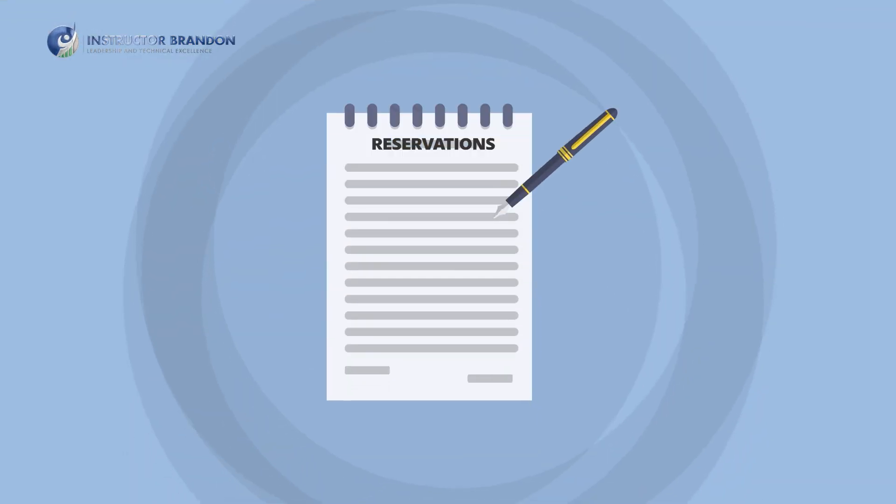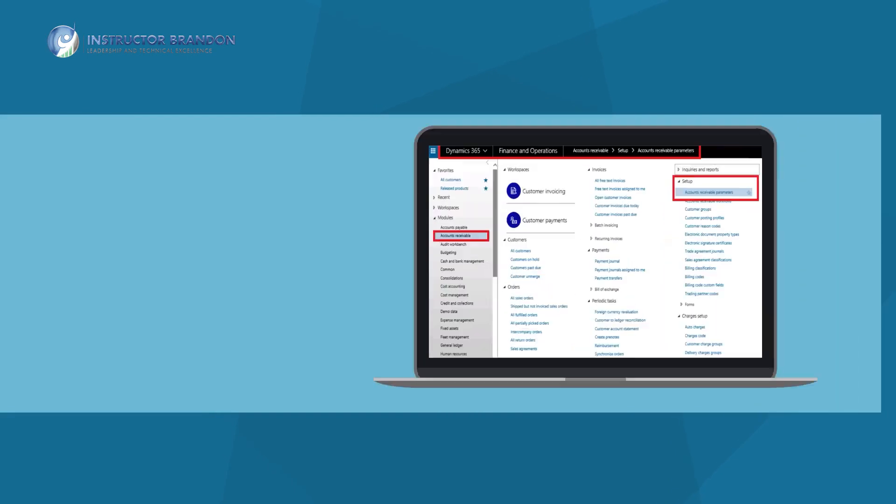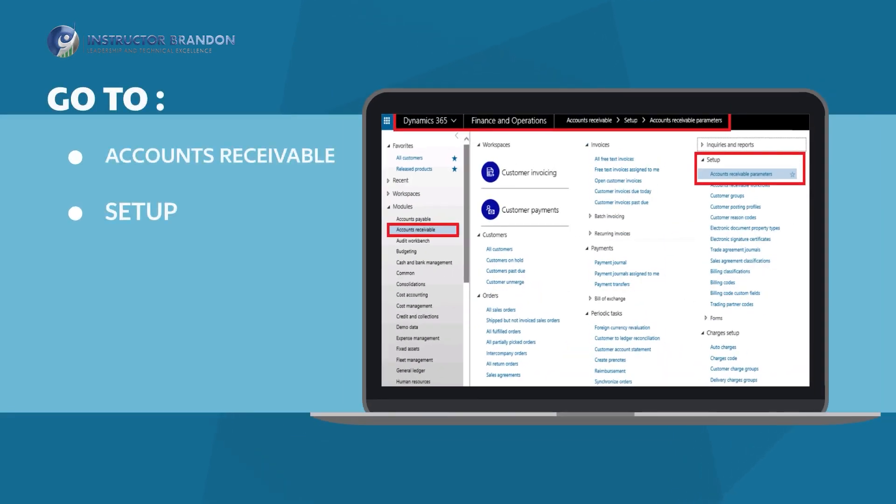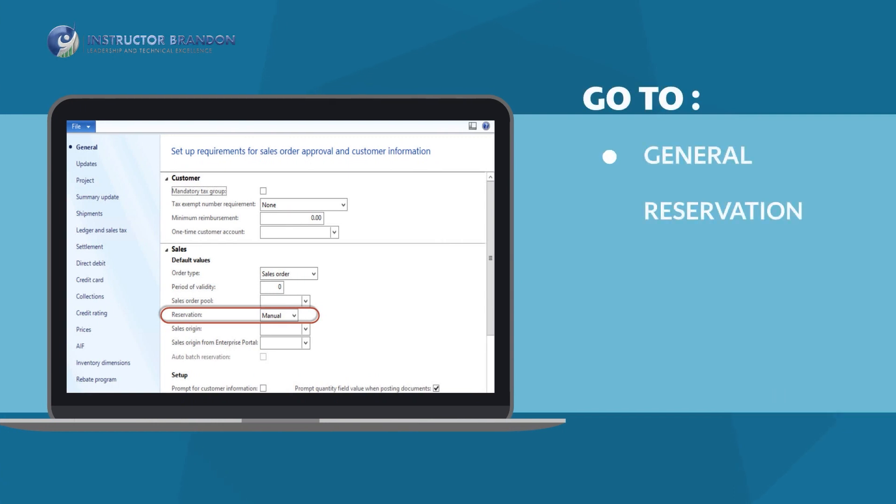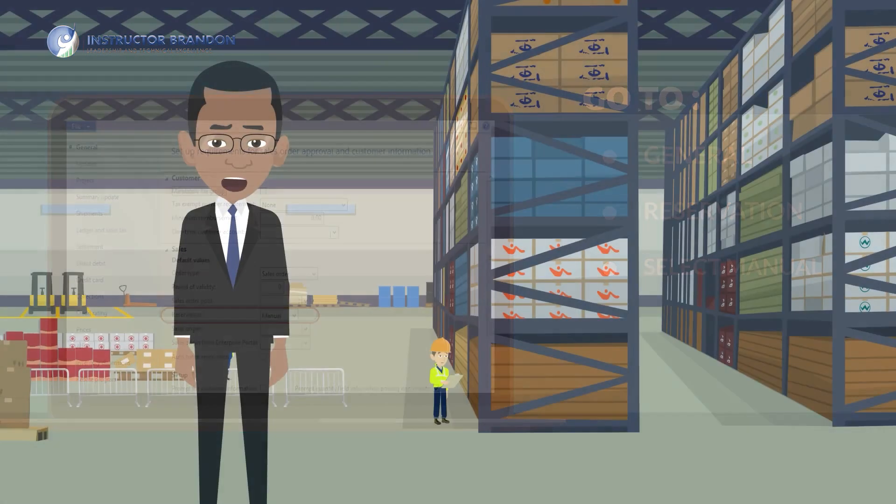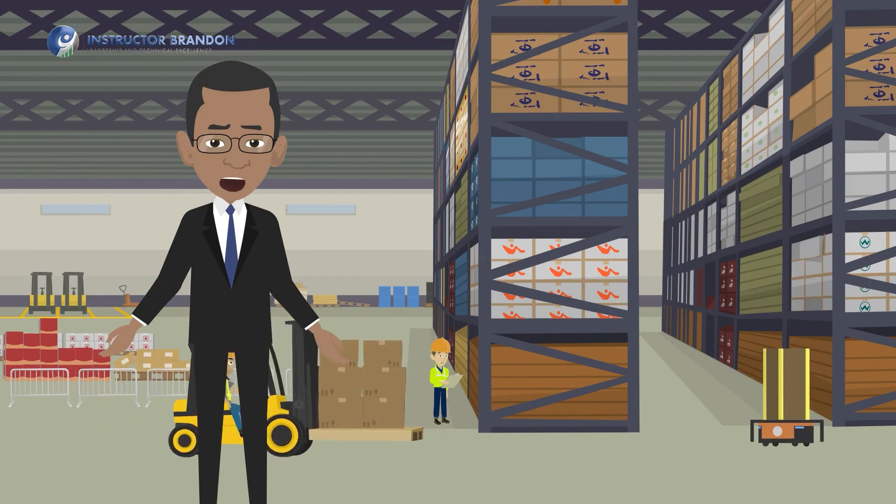Now for the manual process, when it comes to individual orders, you can set up reservations manually by clicking on accounts receivable, then setup, and then accounts receivable parameters. Go to the general area in the reservation field and select manual. And that's it. That's how you have a reserved inventory.